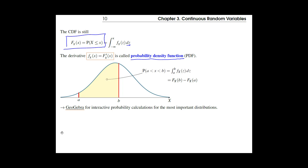The formula we use to compute probabilities is to integrate the PDF between the two bounds. Notice this is almost the same formula as in the discrete case — in the discrete case we had a less-than-or-equal, but now it doesn't make a difference. All these forms are equivalent. You can either use the integral or use the CDF.